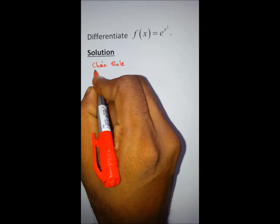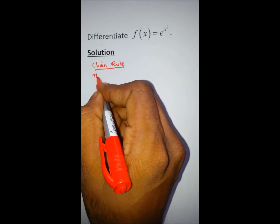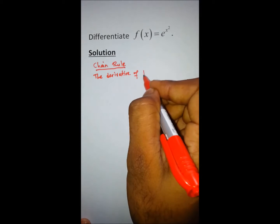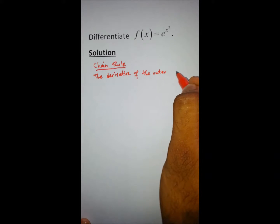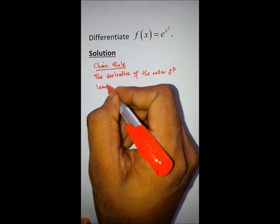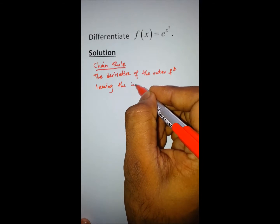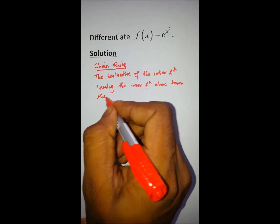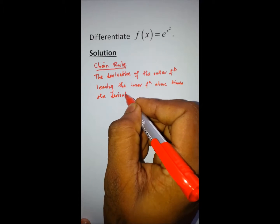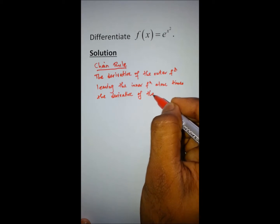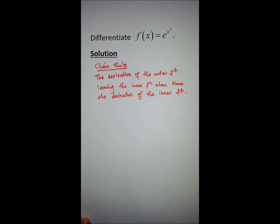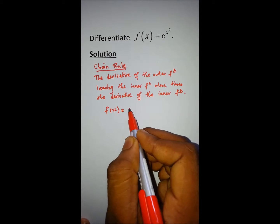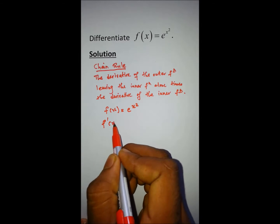So this is basically the chain rule, and we need to utilize it to differentiate f(x) = e^(x²). The derivative would be found by identifying the outer and inner functions.